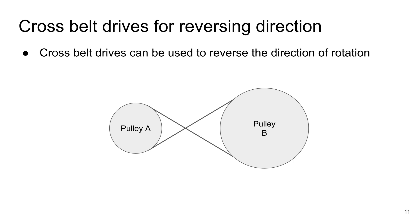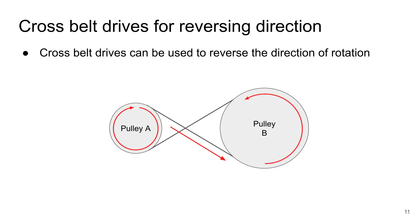There is a particular configuration of belt drives unique to belt drives — the cross belt configuration. Cross belt drives can be used to reverse the direction of rotation. In this example, pulley A rotates in the clockwise direction. It drives the belt diagonally from top to bottom to pulley B, causing pulley B to rotate in the anticlockwise direction.